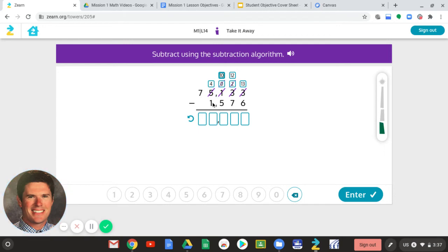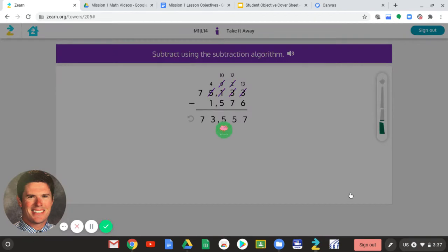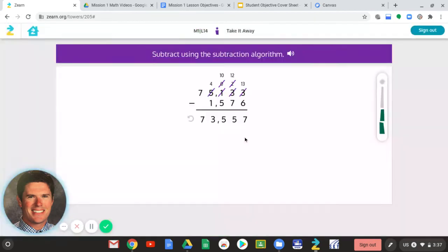Now I can do 4 minus 1. I can do 7 minus 0. So now I'm set to subtract. So now I just go back and I say, 13 minus 6 is 7. 12 minus 7 is 5. 10 minus 5 is 5. 4 minus 1 is 3. And 7 minus nothing is 7.